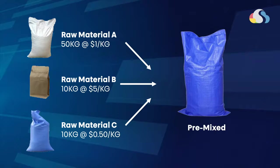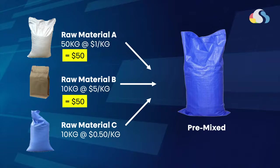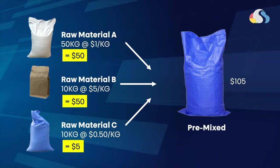Instead of trying to second-guess, what Jessica can do is start looking at the cost of each individual item. So: 50 kg at $1 per kg gives you $50; $5 for 10 kg of raw material B; and $5 for 10 kg of material C — giving a total of $105 and 70 kg of premix total.